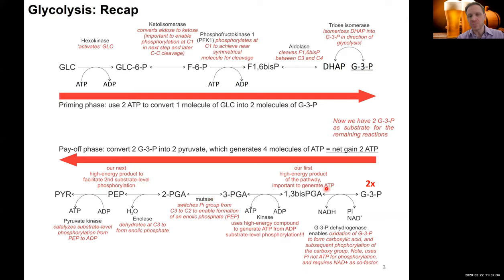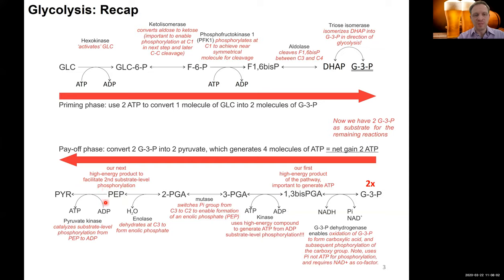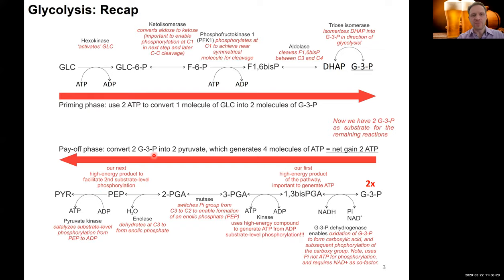This isomerization brings 3-PGA — which lost energy when it transferred to ATP — back to a high-energy compound (PEP) without using ATP. Now using pyruvate kinase, we break down PEP via dephosphorylation, transferring the phosphoryl group to ADP, making another two molecules of ATP and releasing pyruvate as the final product of aerobic glycolysis. The net gain: we used two ATP in the priming phase, generated four ATP in the payoff phase — a net gain of two ATP.